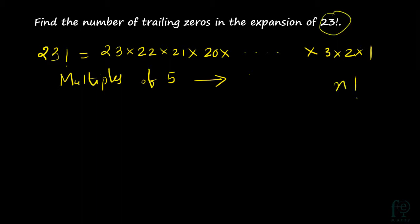You will be asked to find out the number of zeros in n factorial. So you have to know how many multiples of 5 will be there. The key here is that you have to go on dividing n by 5 until you get a number less than 5.